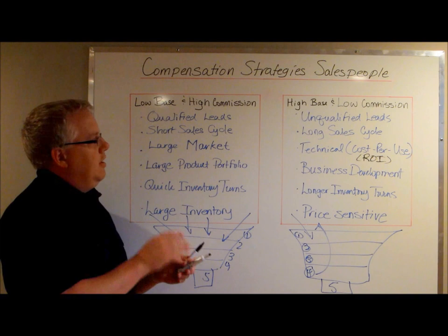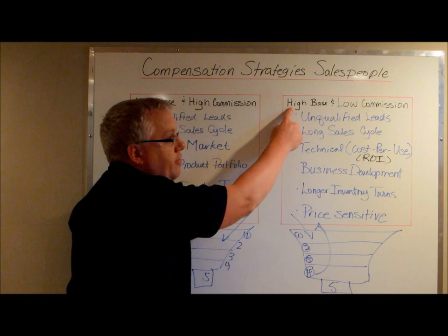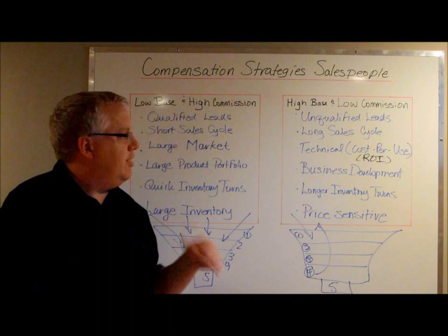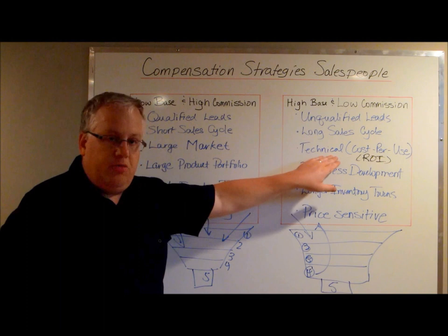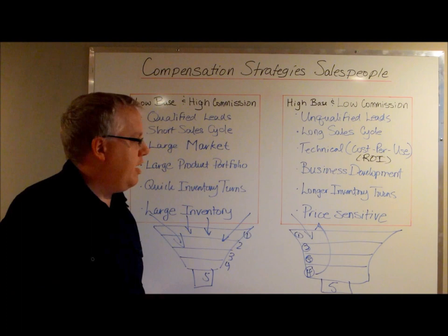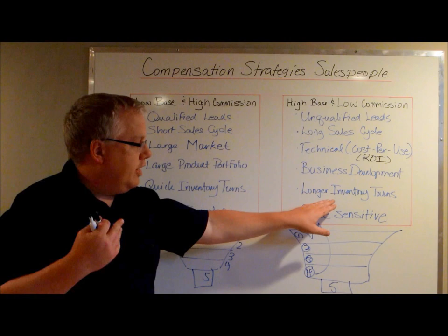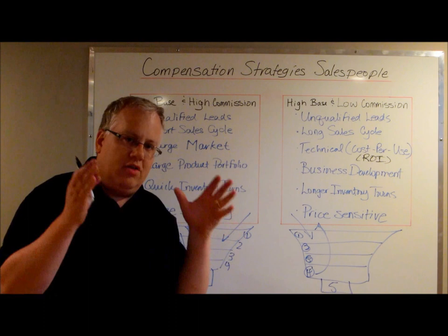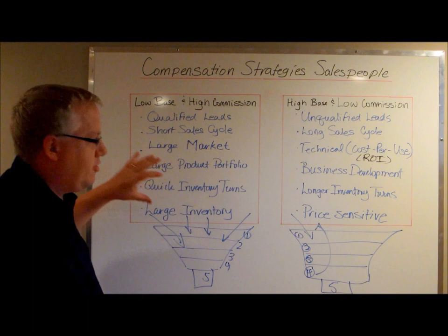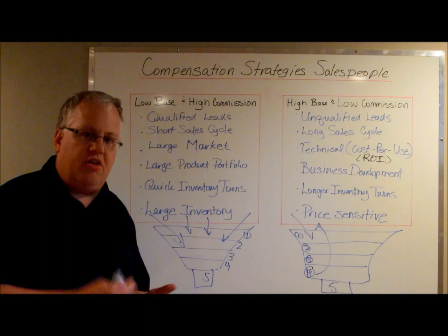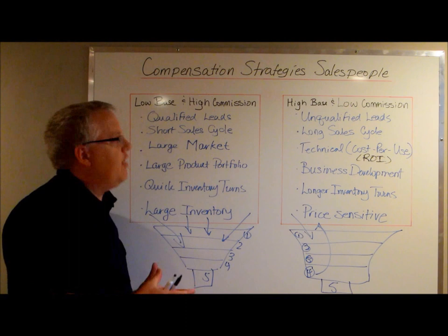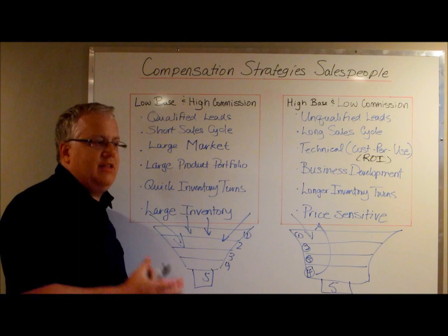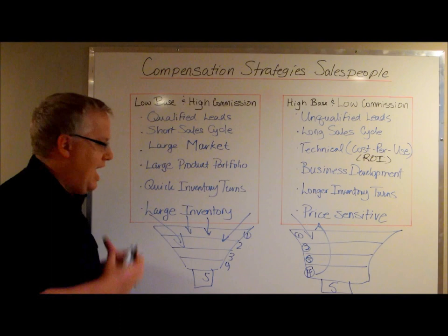If you try to run a business development model and give an individual a low base and high commission, it will not work. They will be upset at the fact that they have to qualify the leads. They will be frustrated by the long sales cycle. They will not understand the cost-per-use benefit of the product offering. They will push for a decision before the customer is ready, focus less on business development, and not appreciate the longer inventory turns, because when you hold inventory for a longer period you need profit margins to absorb the holding costs. They will not be as respectful towards price and will want to make quick, immediate sales, because anyone from a low base and high commission structure is quick on their feet and ready to make a deal.